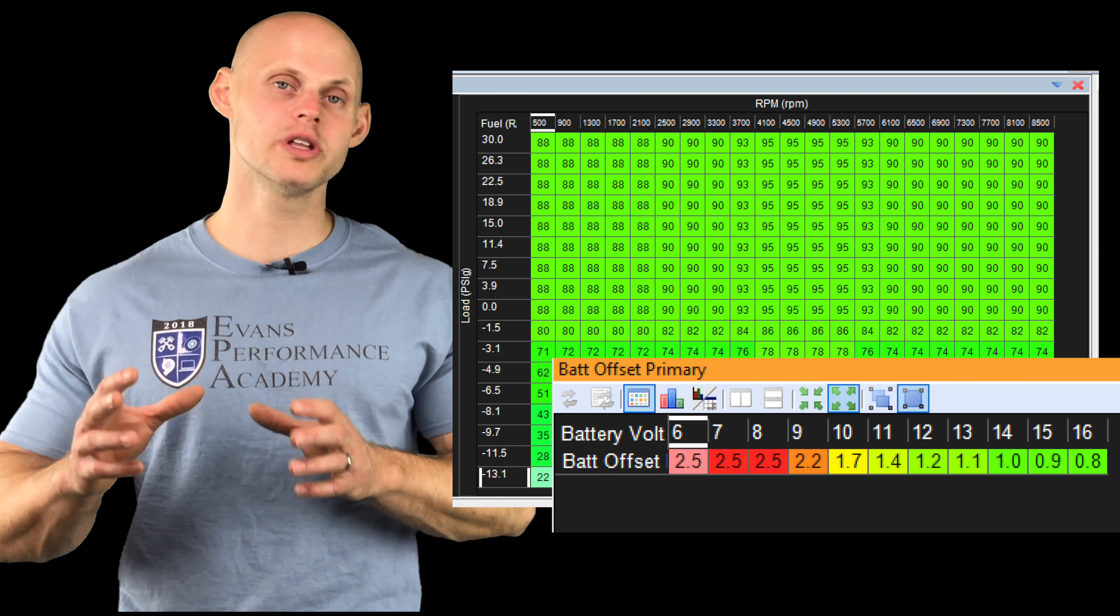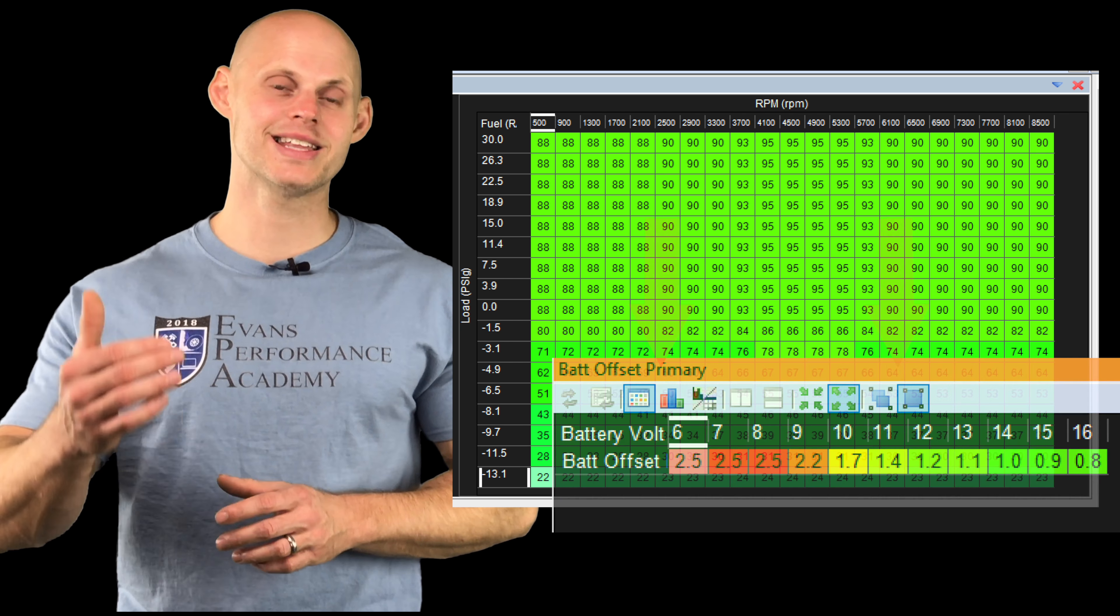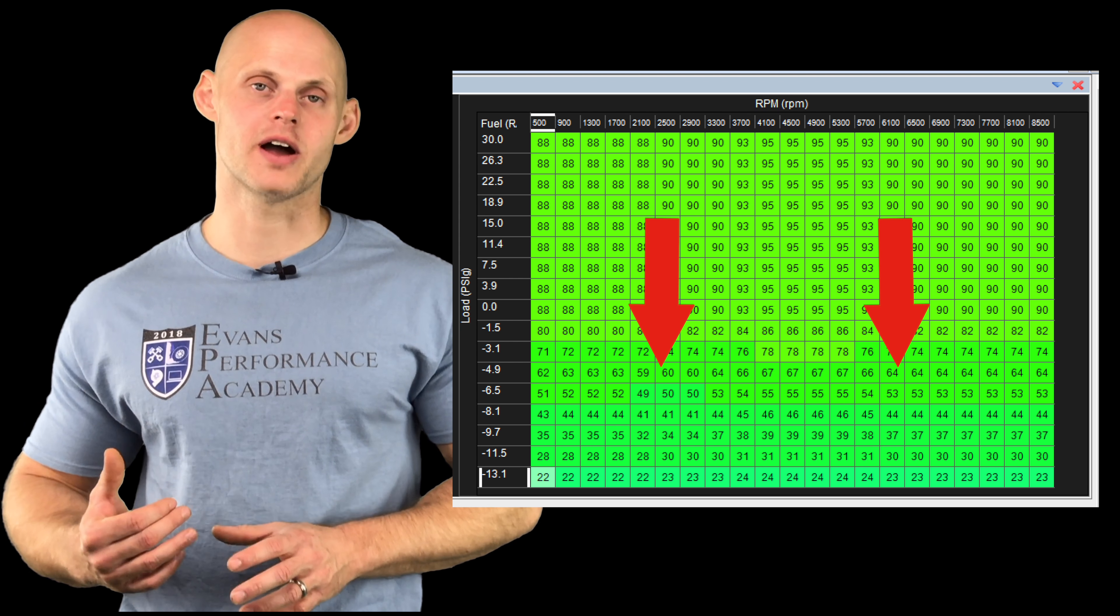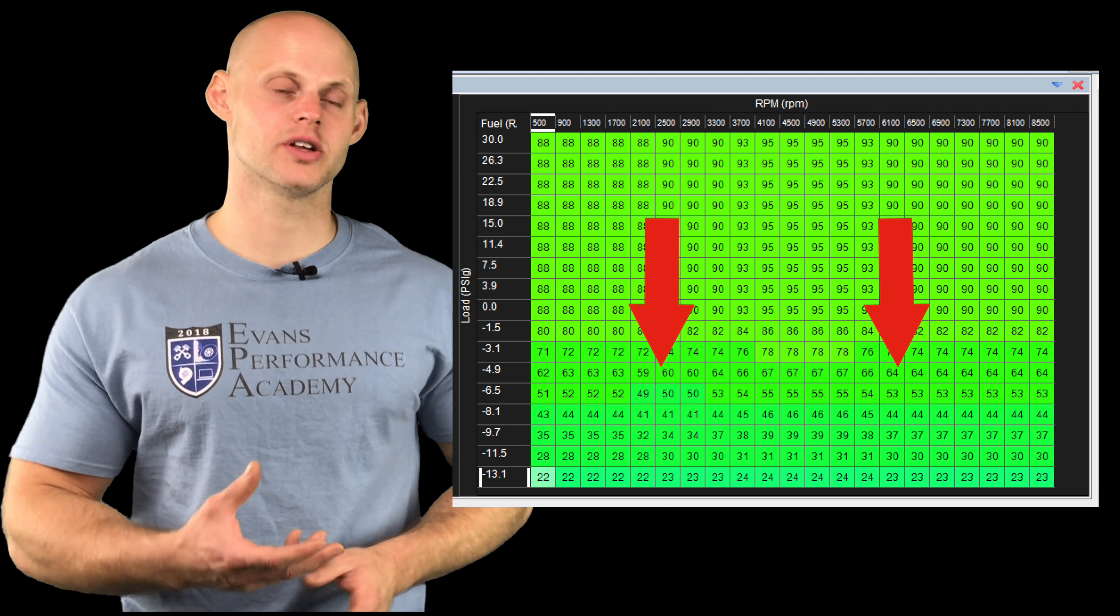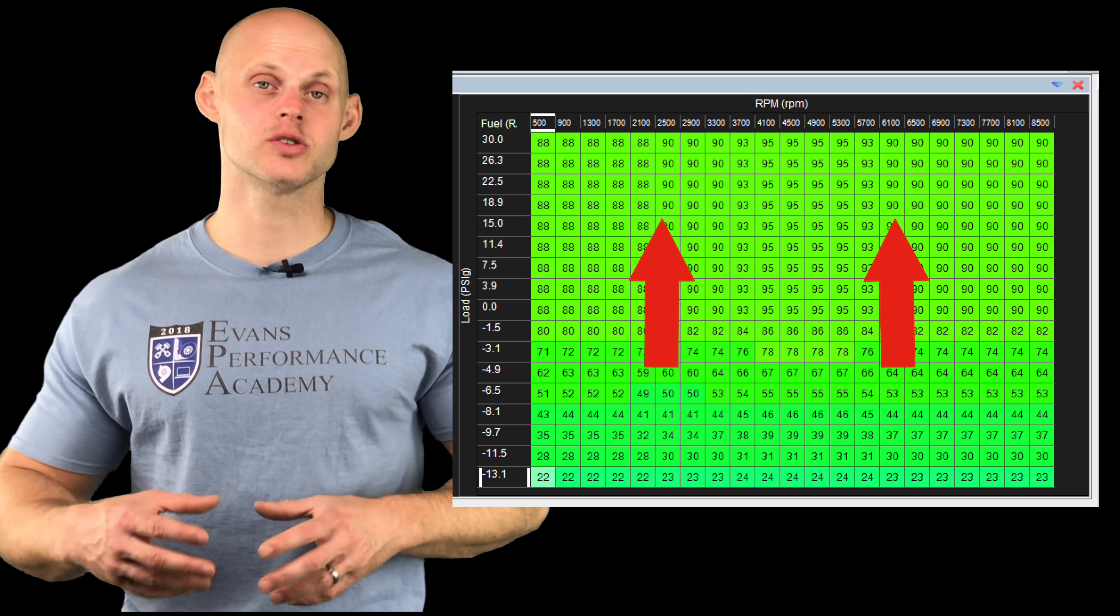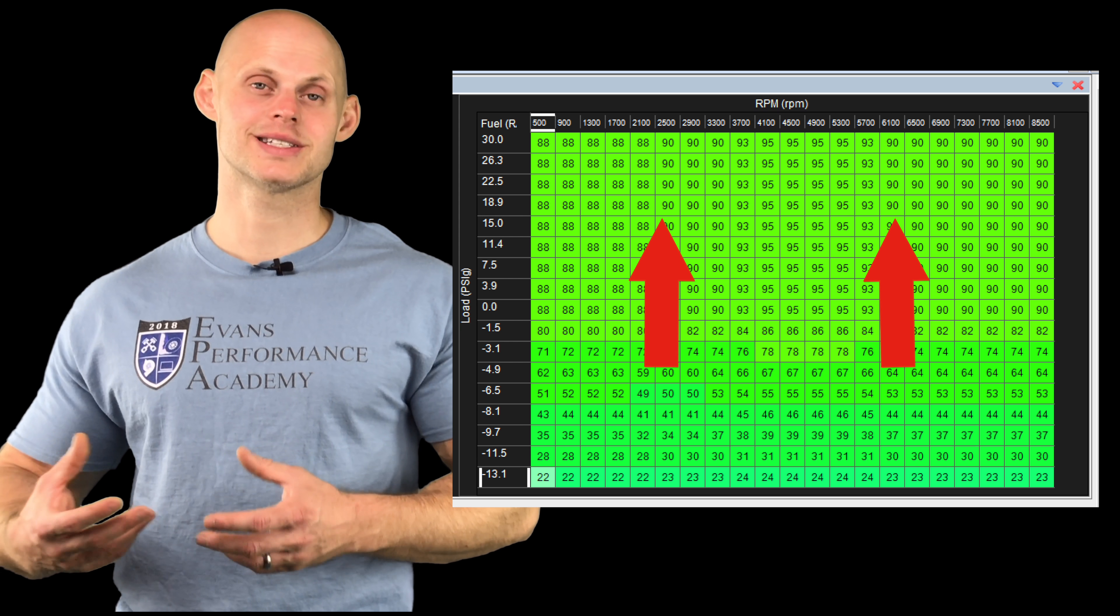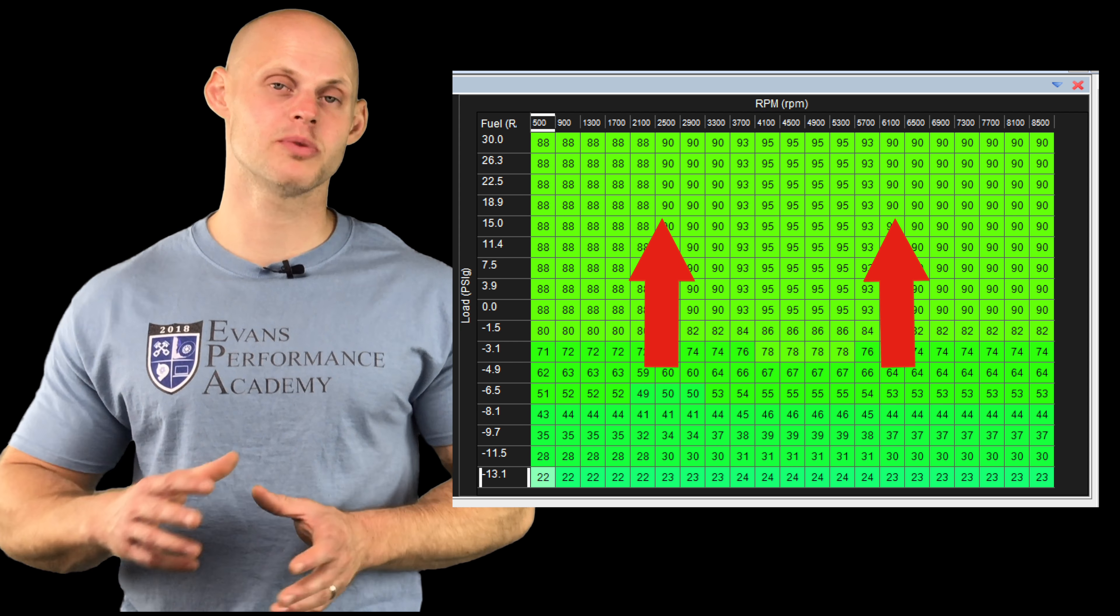For example, if we have a really large injector, we're going to be scaling down the raw values in the table to much lower values. If we have a very small injector, like a 200cc injector, the values would be increased because that's going to give us a higher injector pulse width. It's a pretty simple system.